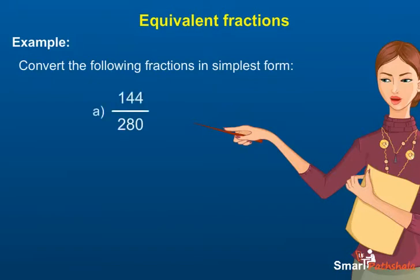A: 144 by 280. B: 121 by 1331. Explanation. A: the highest common factor or HCF of 144 and 280 is 8.